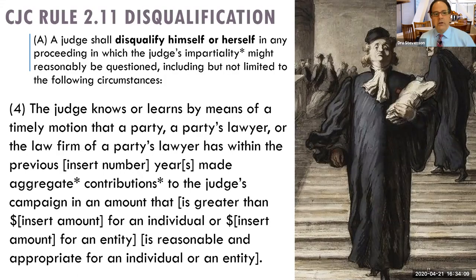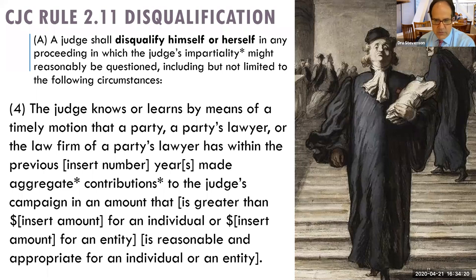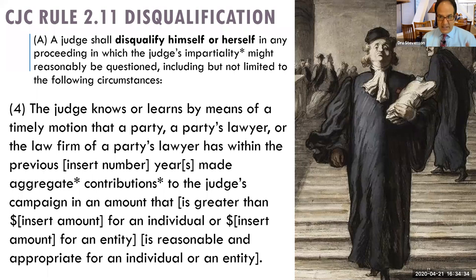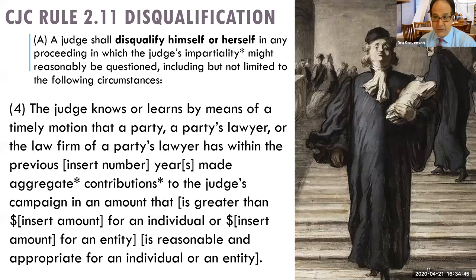A4 is when the judge knows or learns by means of a timely motion that a party, the party's lawyer, or one of the firms involved in the case has made substantial contributions — within a certain number of years — an aggregate contribution to the judge's campaign in an amount greater than a specified threshold. If you get a test question about this rule, it's going to say that this is a major donor to the elected judge's campaigns.